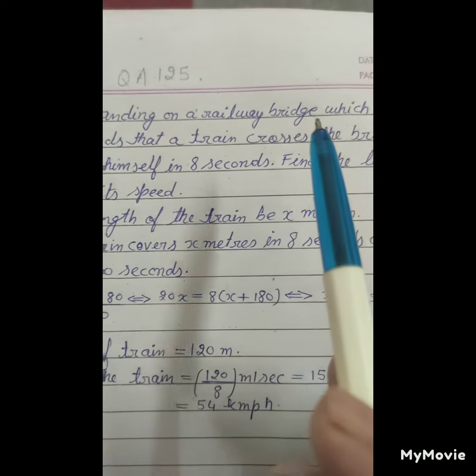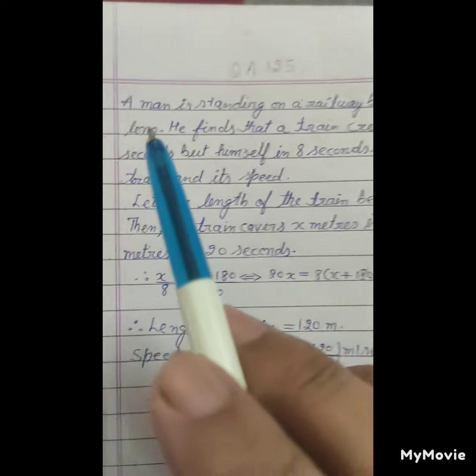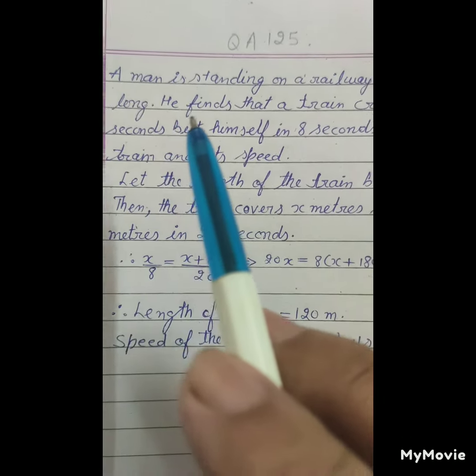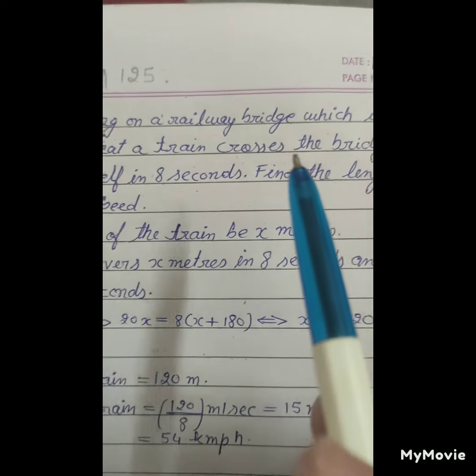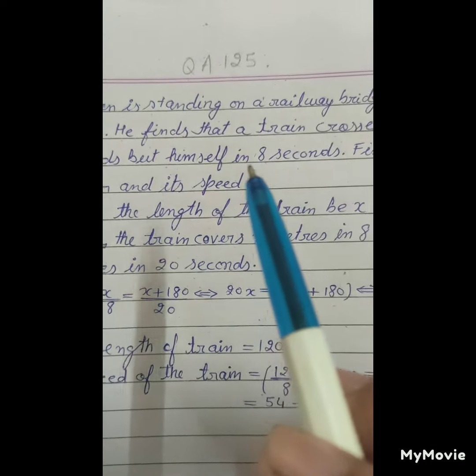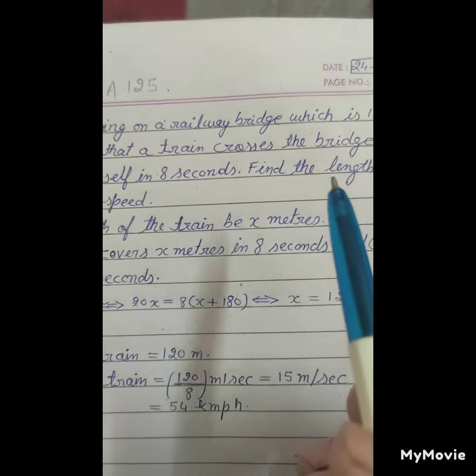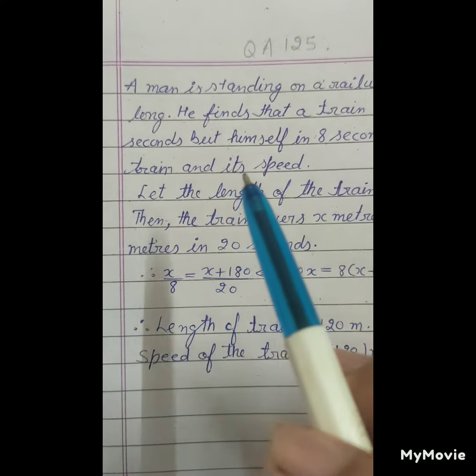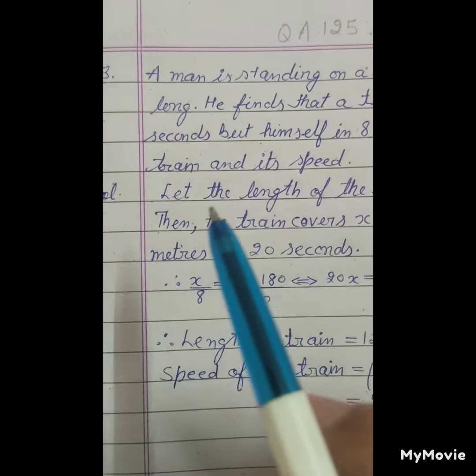A man is standing on a railway bridge which is 180 meters long. He finds that the train crosses the bridge in 20 seconds but himself in 8 seconds. Find the length of the train and its speed. Solution: